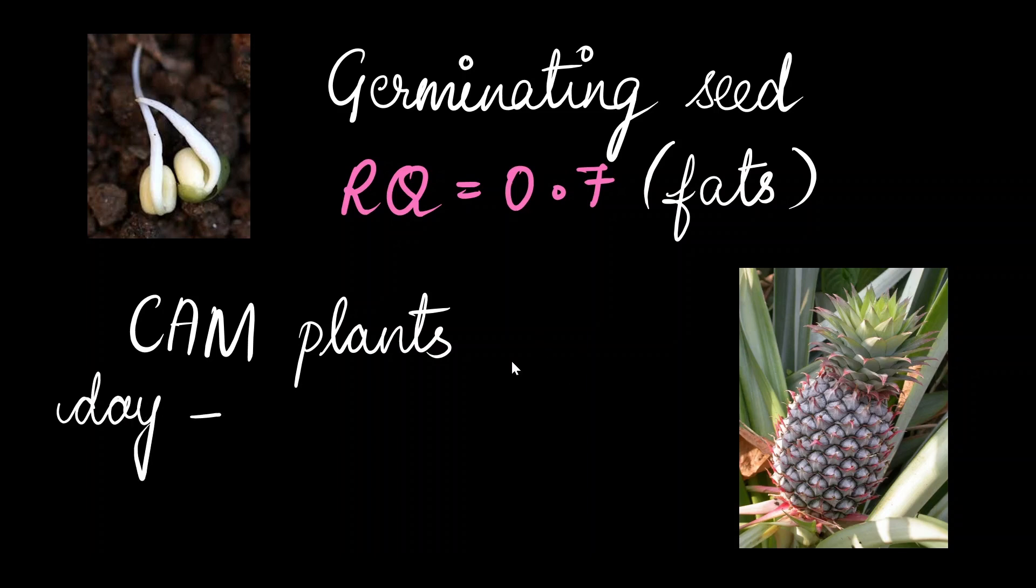During the daytime, CAM plants close their stomata to prevent the water loss and they utilize the stored malic acid to produce food. In the process, they release carbon dioxide and consume oxygen. So, this results in the RQ value of 1.